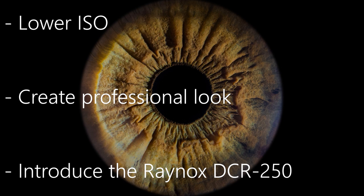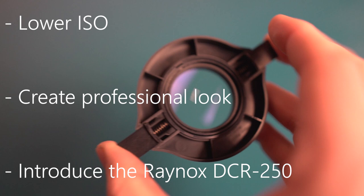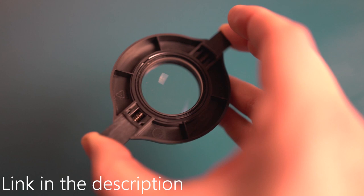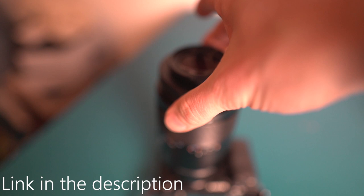One of the most important things in iris photography is to shoot at low ISO. I will also tell you how to create a professional look of your image afterwards and I will also introduce the Raynox DCR-250 which doubles the magnification of the lens which is incredibly important for this kind of photography.